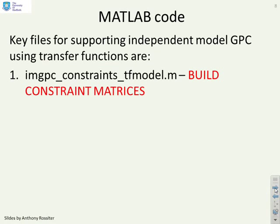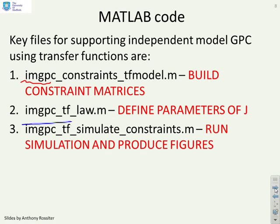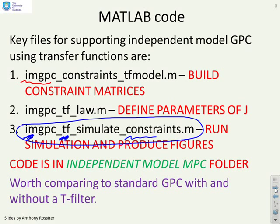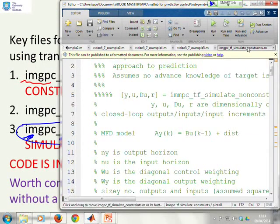What about MATLAB code then? So there's several files. I'm not going to go through them all, but just so you know what they are. There's IMGPC Constraints TF Model. And you'll notice, hopefully, the title is obvious. It's got the IM to tell you it's independent model. We've got IMGPC TF Law and the key one, which we're just going to look at briefly, is this one here, IMGPC TF Simulate Constraints. It is a long title, but it's to make sure everything is clear. The IM tells you it's independent model. The TF tells you independent model based on a transfer function. And the constraints tell you it includes constraints. If you want to find the code, it's in the folder independent model MPC. And what you might want to do, of course, is compare how this works to standard GPC and GPC with and without a T filter. Now, what I'm going to do first is just have a quick look at this code so you can see how straightforward it is.